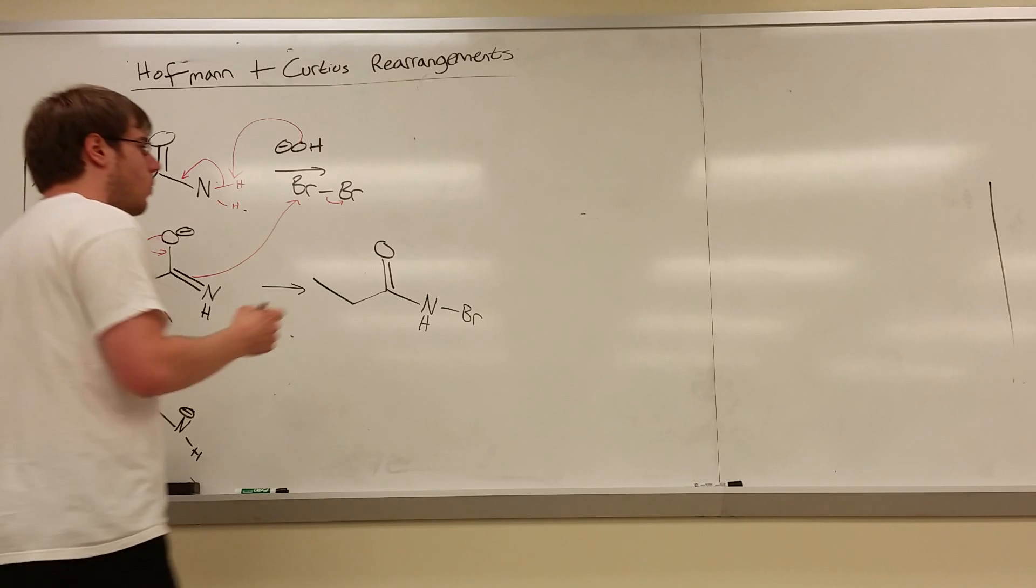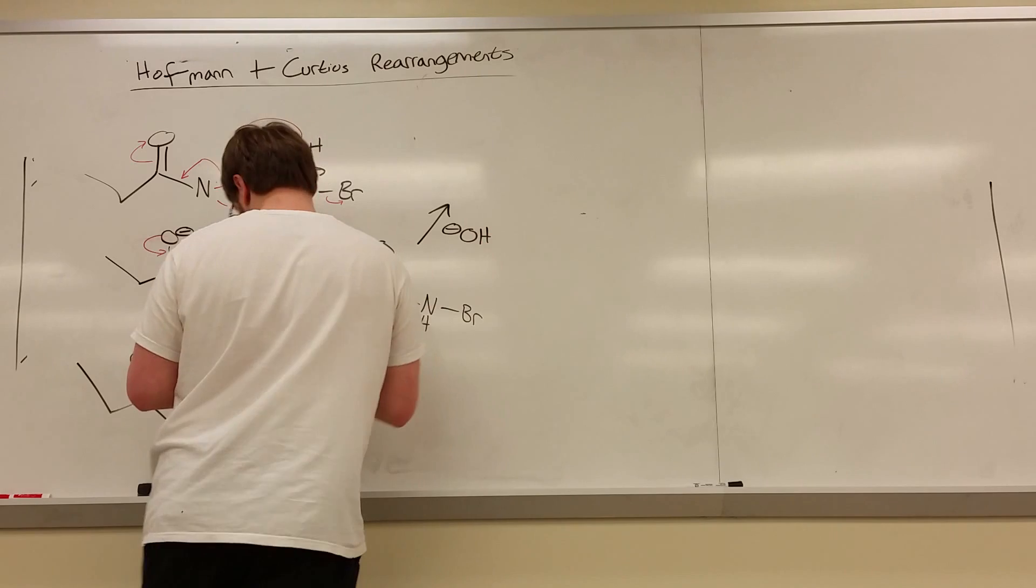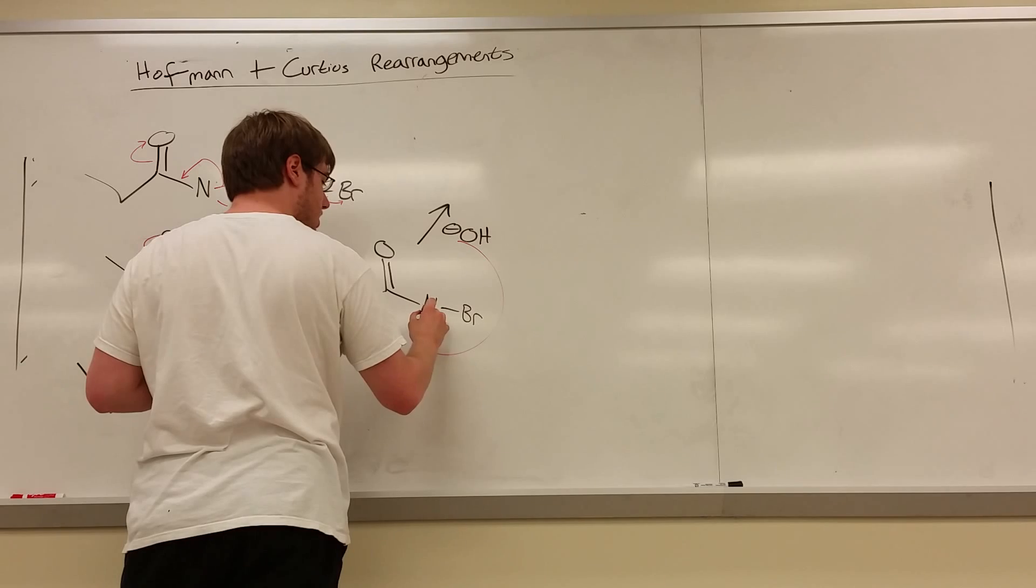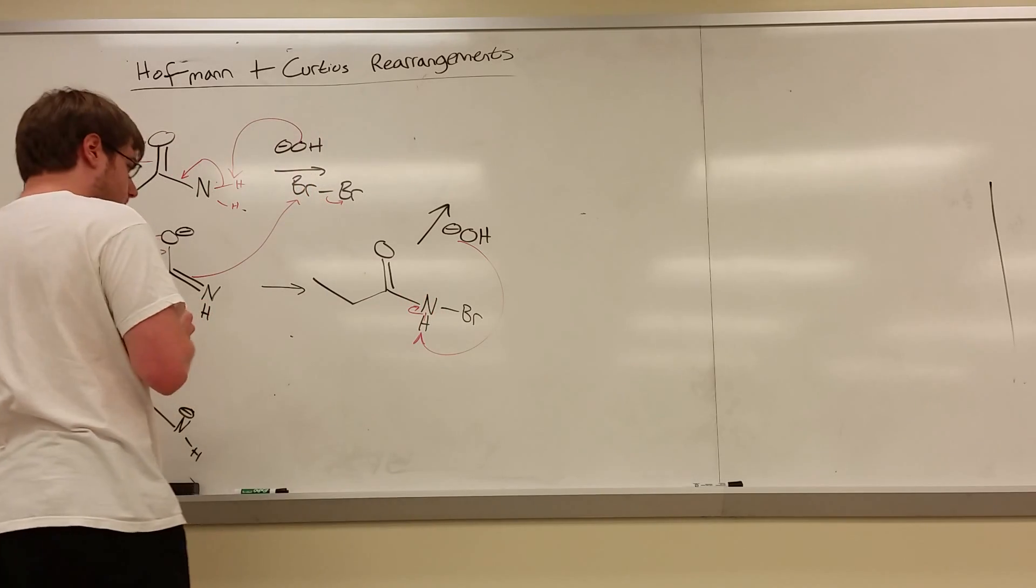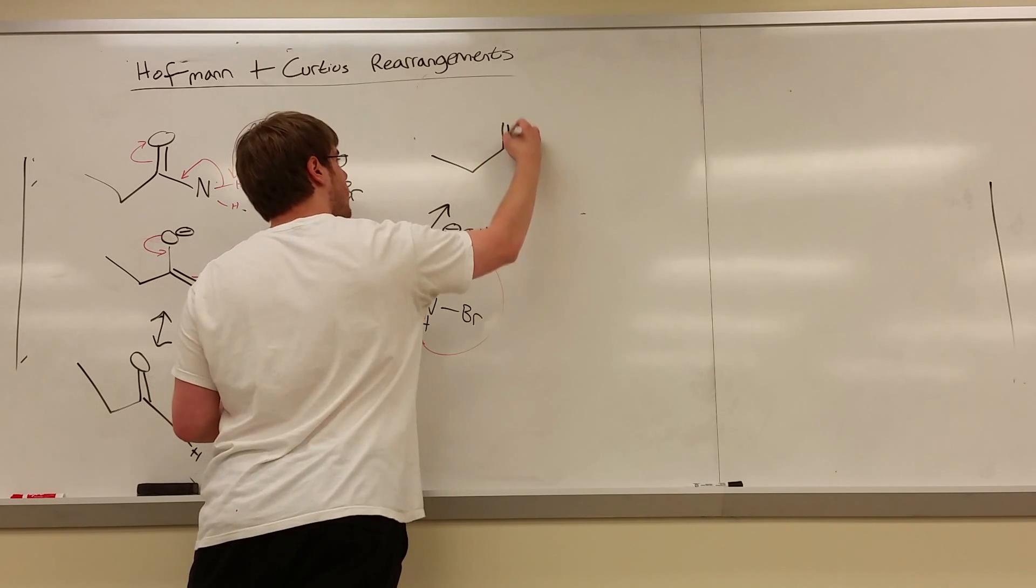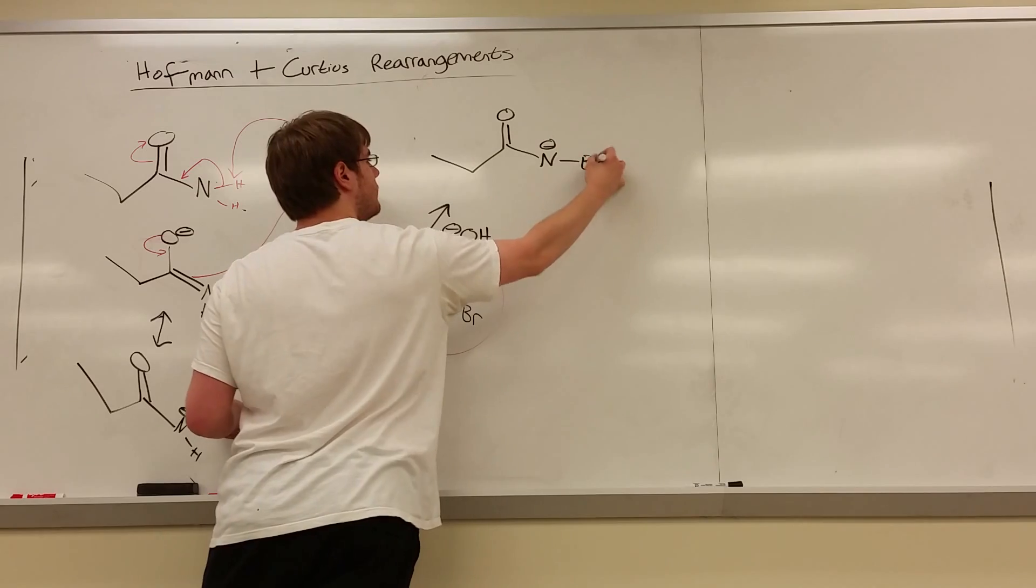So we know who's going to do the attack just like an enolate. The oxygen will swing down, reforming its double bond, and this will go out and attack something. And the thing it attacks is your Br2. You're going to end up attaching a bromine to that nitrogen. So you'll have double bond O, N-H, Br. So already it looks kind of weird.